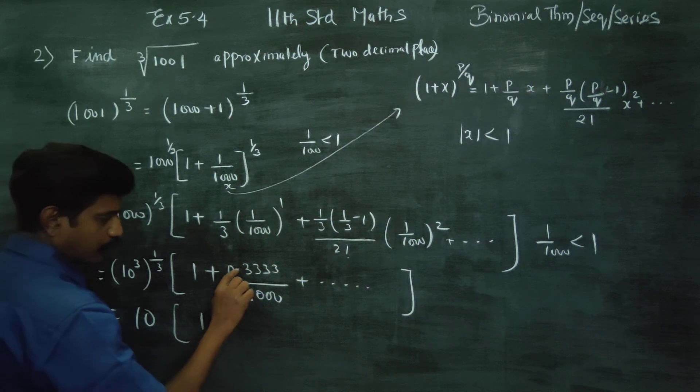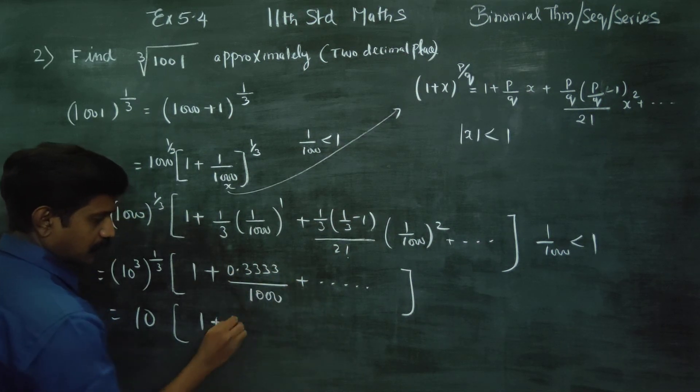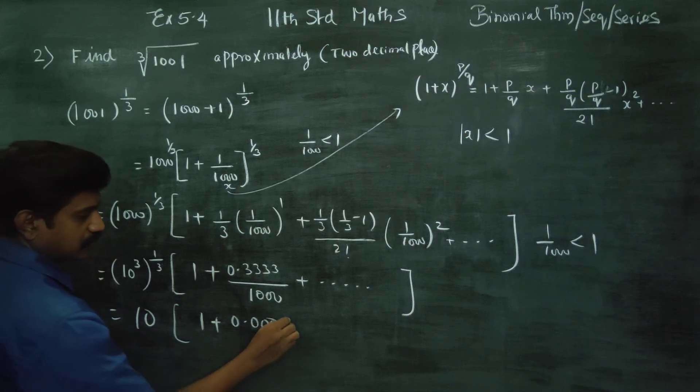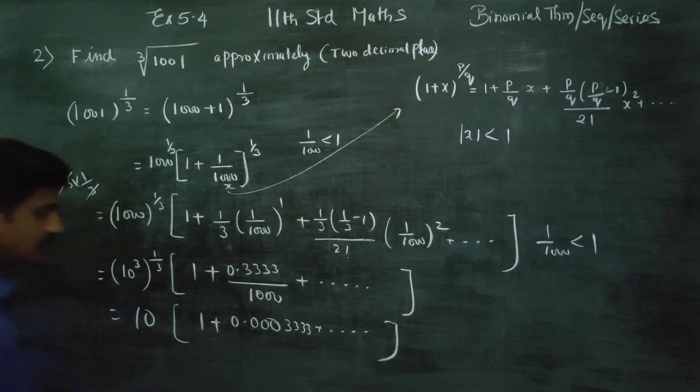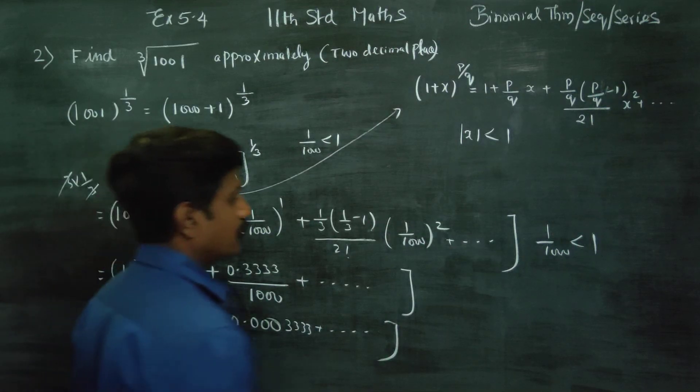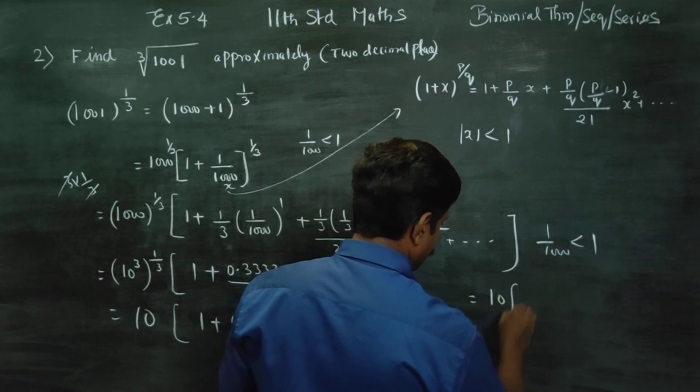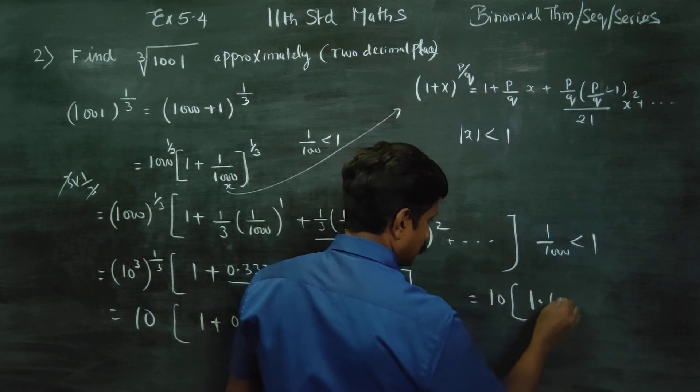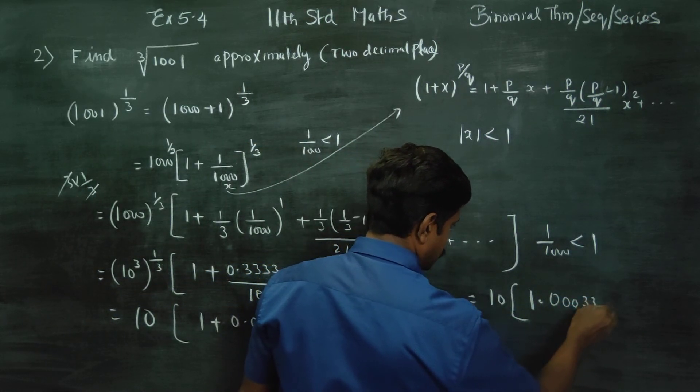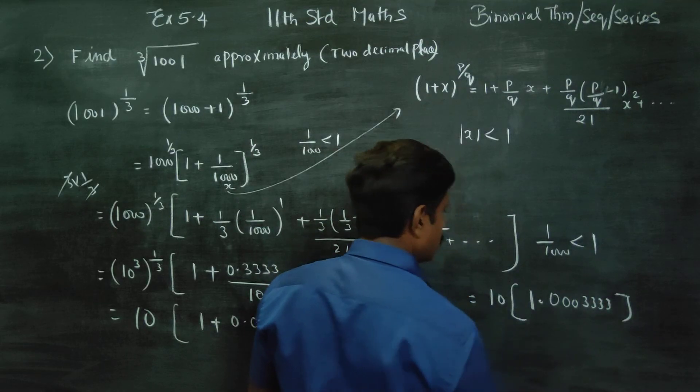1, 2, 3. There are 3 digits. Then, 0.000333. Add this. Your answer will be 10 into 1.000333333. Then, stop.